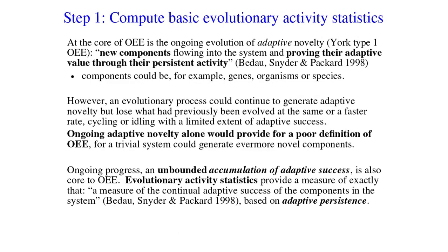Let's get started with Step 1: computing basic evolutionary activity statistics. At the core of open-ended evolution is the ongoing evolution of adaptive novelty — that's York Type 1 open-ended evolution. In Bedo, Snyder, and Picard's words: new components flowing into the system, improving their adaptive value through their persistent activity. So persistence is crucial. A component could be, for example, a gene, an organism, or a species. However, an evolutionary process could continue to generate adaptive novelty but lose what has previously been evolved at the same or faster rate, cycling or idling with a limited extent of adaptive success. So if we just had ongoing adaptive novelty alone, it would be a poor definition of open-ended evolution, as a trivial system could generate ever more novel components.